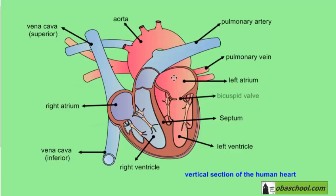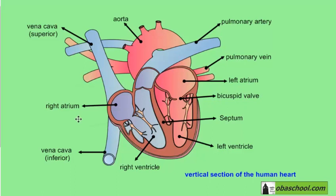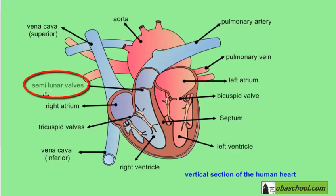Here we have a valve, which is like a gate or a door, between the left atrium and the left ventricle — it's called the bicuspid valve. We also have a valve between the right atrium and the right ventricle; this one is called the tricuspid valve. So we have the bicuspid valve separating the left atrium from the left ventricle, and the tricuspid valve separating the right atrium from the right ventricle. We also have other valves called semilunar valves, which separate the right ventricle from the aorta.